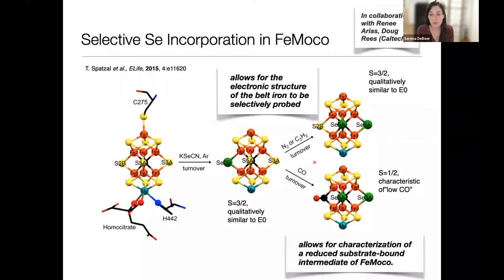When you put this under turnover, the selenium in the 2B position migrates roughly 50-50 percent into the other two bridging positions. This allows us to look at these other bridge positions. The EPR remains quantitatively similar. This gives us a way to use selenium to look around the belt and see different irons in this cluster. We can also look at a substrate-bound intermediate by putting this under turnover with CO. We see a characteristic EPR signature that we know is a CO-bound form. The CO goes uniquely into the 2B position, whereas the selenium stays in the 3A and 5A positions.